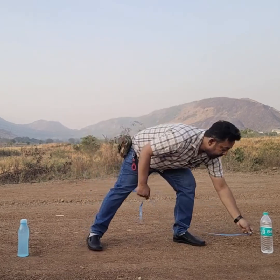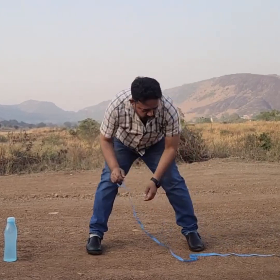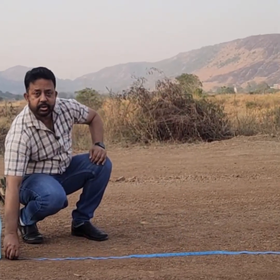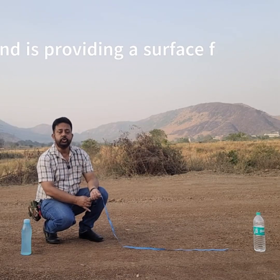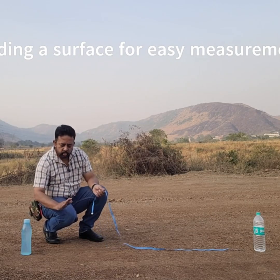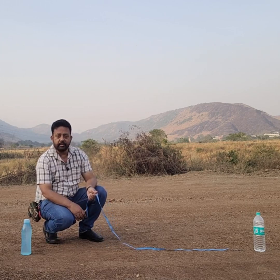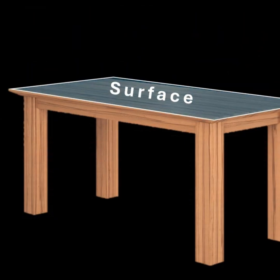But if we keep the measuring tape on the ground, then it will be fairly easy for us to measure the distance between the two. We need a surface on which to measure — it is always easy to have a surface like the ground to measure something. So there are two things mainly: we need a surface on which to measure, and an origin point from where to start the measurement.